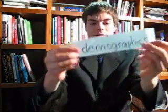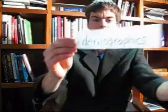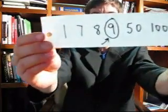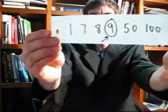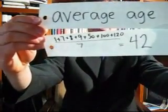Let's do some review. Demographics is groups of people. The median age is the middle age in a lineup of how many customers we have. The average is adding up all of the ages of our customers and dividing it, which equals 42.